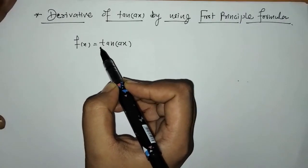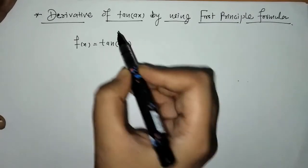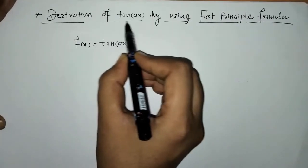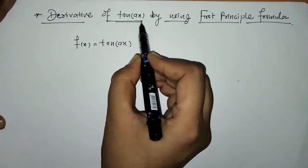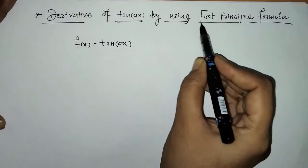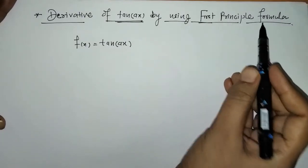Hello everyone, welcome to Unlock Maths. Today we have to find the derivative of tan of ax by using the first principle formula.